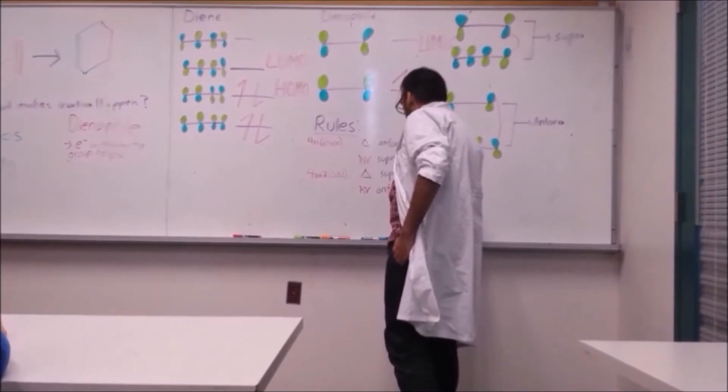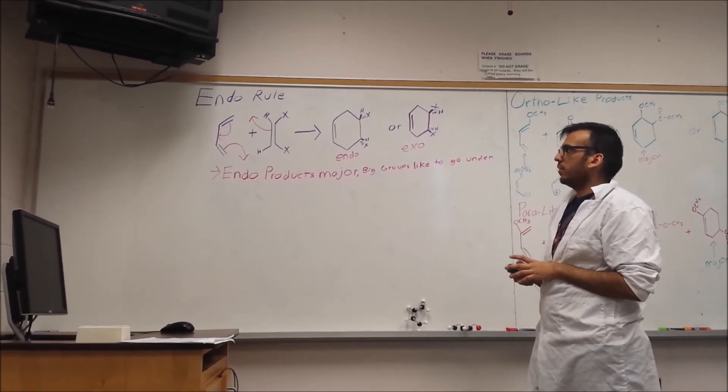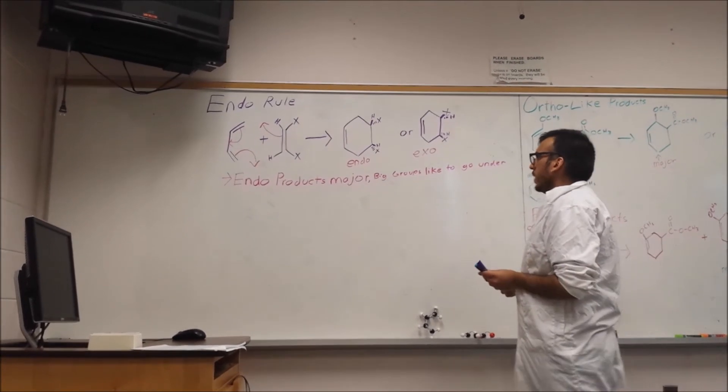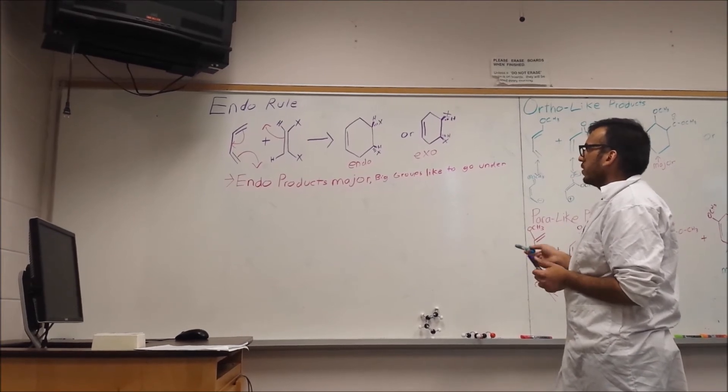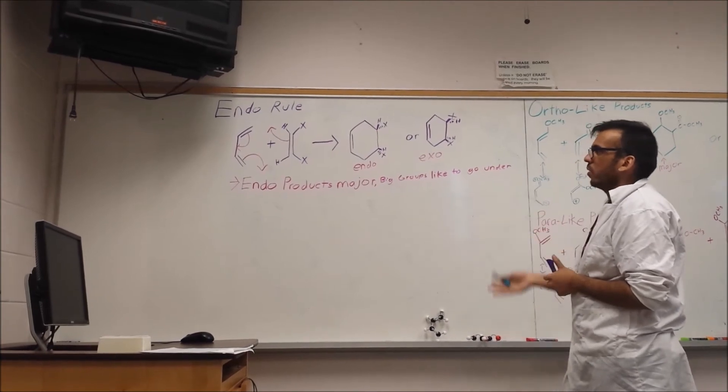Alright. When it comes to deciding stereoselectivity, 4 plus 2 reactions follow the endo rule. And the endo rule basically says that the major product of the 4 plus 2 cycloaddition will have it so that the bulky groups are underneath the plane of the ring.